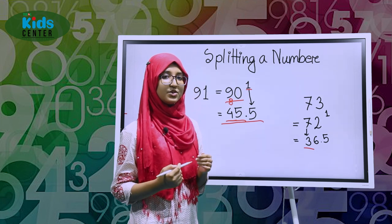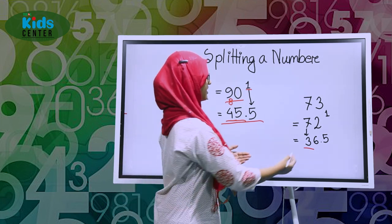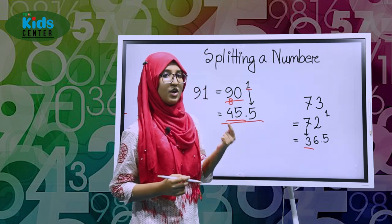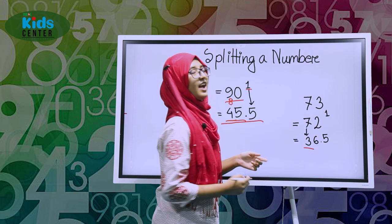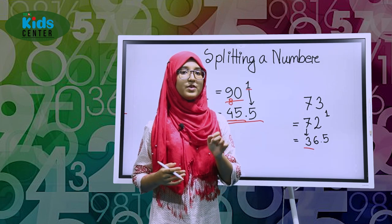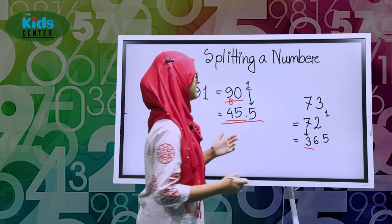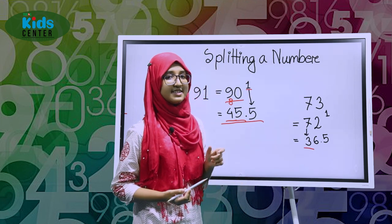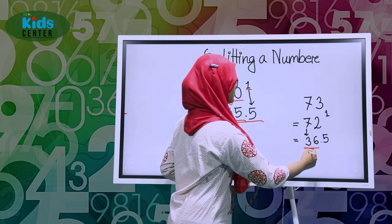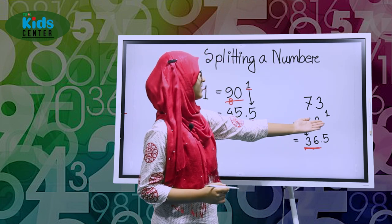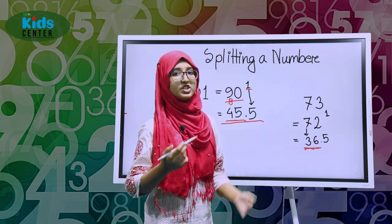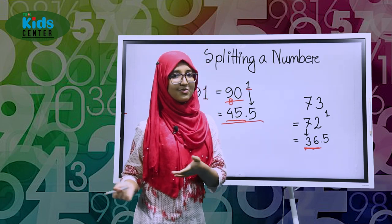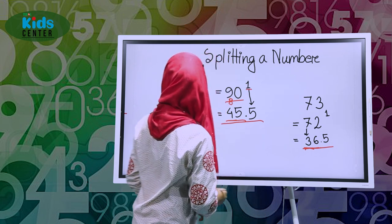So we write 3 here. What do we do with the other 1? We add it with 2, and when we add it with 2 we will get 12. So now we divide 12 and we will get 6. So let's write 36. Then we have to split the remaining 1, so just write 0.5, because 0.5 times 2 equals 1. So our answer is 36.5.